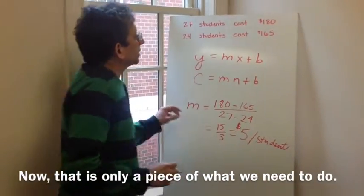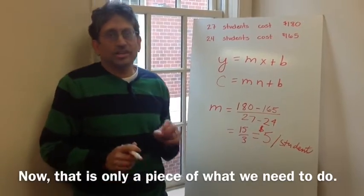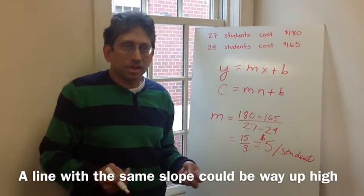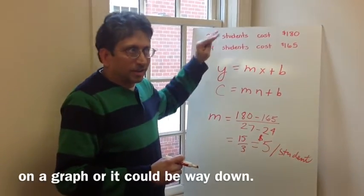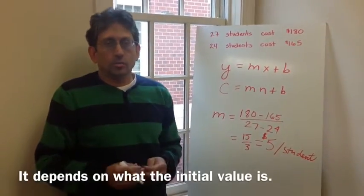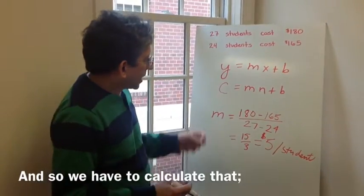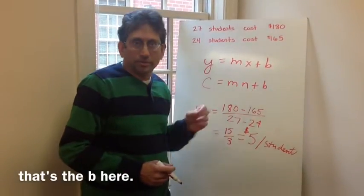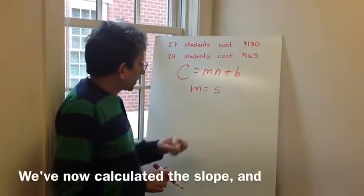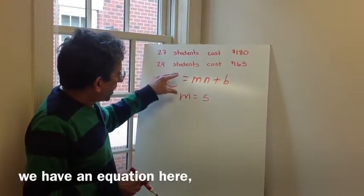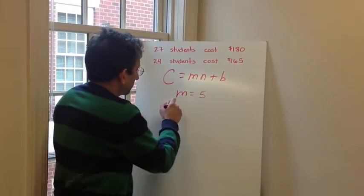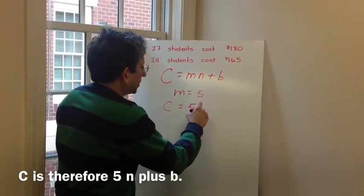Now that is only a piece of what we need to do. The line with the same slope could be way up on a graph, or it could be way down. It depends on where the initial value is, and so we have to calculate that. That's the b here. We've now calculated the slope, and we have an equation here. c is therefore 5n plus b.